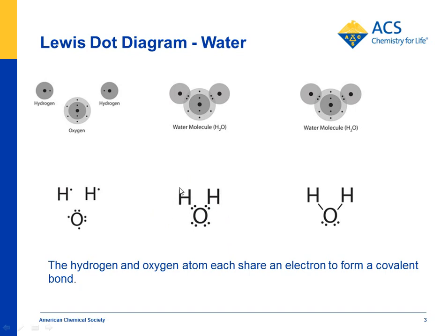We've chosen to show the shape of the molecule here — not all Lewis structures of H2O will do this; some will be linear. But we did this to reflect the shape students are familiar with. The one electron from hydrogen is shared with the one electron from oxygen in both cases, forming the covalent bond indicated by the pair of electrons between them, which you can then convert to lines.